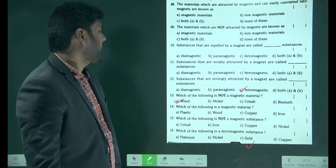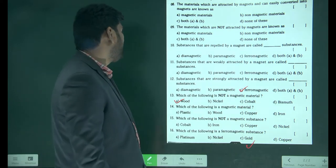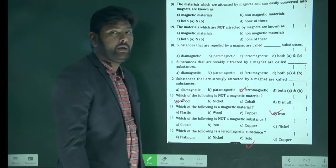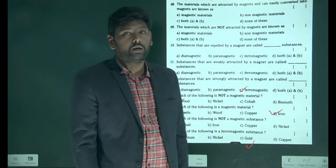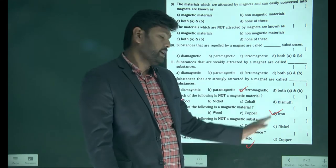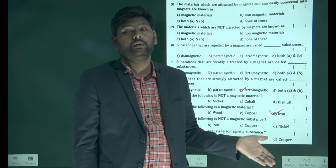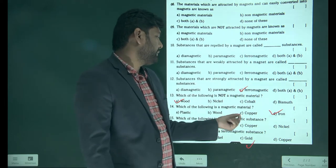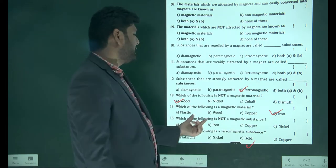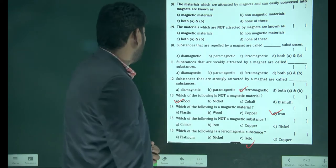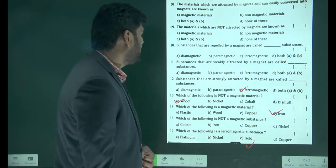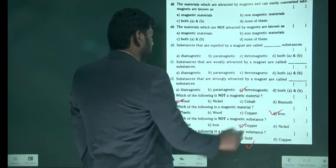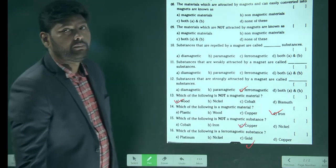Which of the following is a magnetic material — plastic, wood, copper, or iron? Iron is a magnetic material. Even copper is a metal, but copper is not attracted to the magnet, so copper is not a magnetic material. Plastic and wood are also not magnetic materials. Next: which is not a magnetic substance — cobalt, iron, copper, or nickel? Simply, copper. Copper is not a magnetic material.